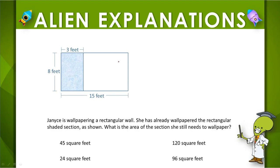Janice is wallpapering a rectangular wall, and she has already wallpapered the shaded section. We're trying to find the area of this undone section. So we need to know the length and the width of this section.